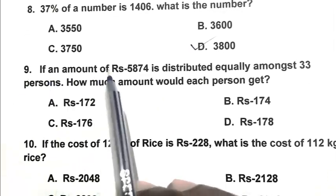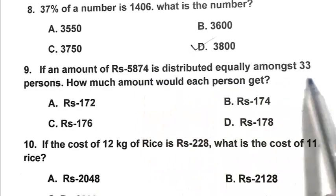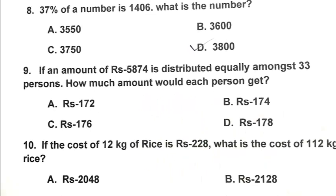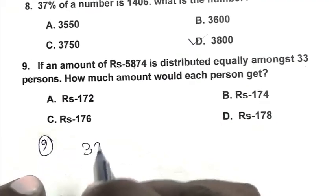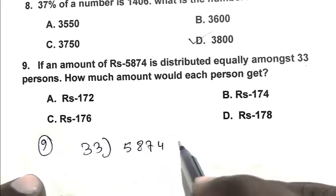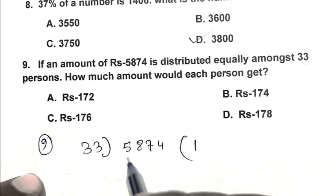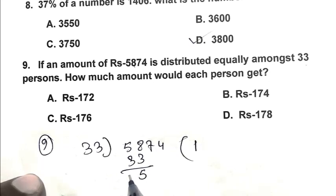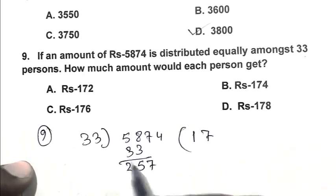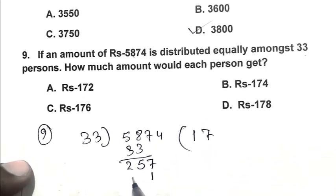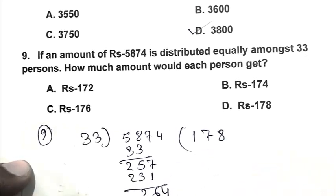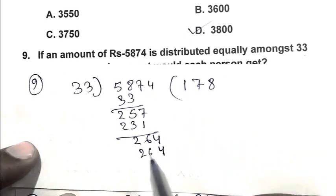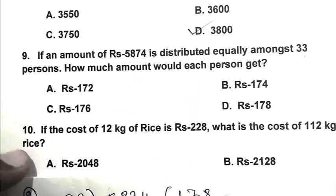Question number 9. If an amount of rupees 5,874 is distributed equally among 33 persons, how much amount would each person get? So simply we calculate it by dividing this number by 33. So 33 divided into 5874. One time 33 is 33, remainder 25. Bring down 7, that's 257. 7 times 33 is 231, remainder 26. Bring down 4, that's 264. 8 times 33 is 264. So answer is 178. So D is the right answer.